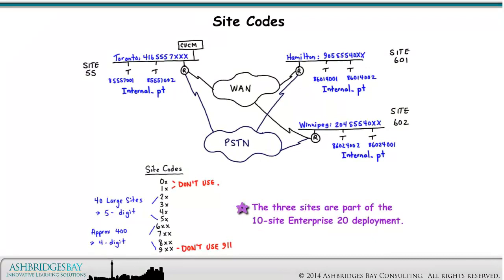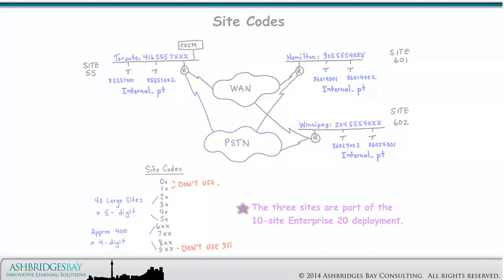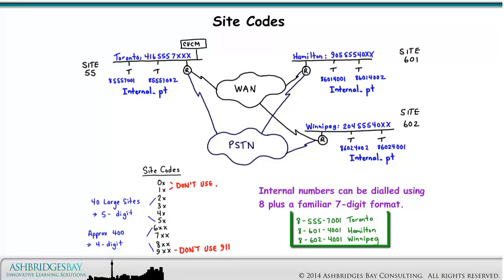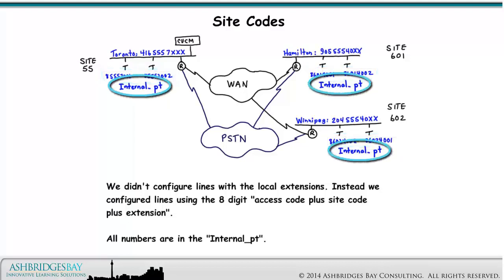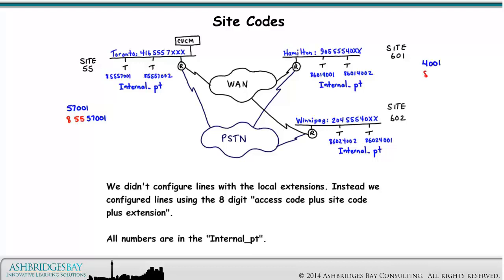The three sites are part of the 10-site Enterprise 20 deployment. Internal numbers can be dialed using 8 plus a familiar 7-digit format. We didn't configure lines with local extensions. Instead, we configured lines using the 8-digit access code plus site code plus extension. All numbers are in the internal partition. For example, Toronto line 57001 is configured as 8-55-57001 in the internal partition. The Hamilton line 4001 is configured as 8601-4001, and the Winnipeg line 4001 is configured as 8602-4001 in the internal partition.